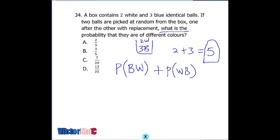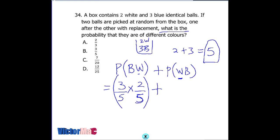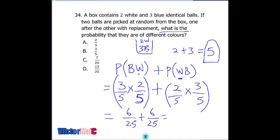The 'or' is changed to addition. For picking blue first, that's 3 out of 5, since the formula is required outcome over total outcome. The second selection to be white is 2 out of 5 — since we are replacing, the total stays at 5. For white first, that's 2 over 5, and second choice blue is 3 over 5. Multiplying: 3/5 times 2/5 gives 6/25, plus 2/5 times 3/5 gives 6/25. Adding gives 12 over 25, option D.